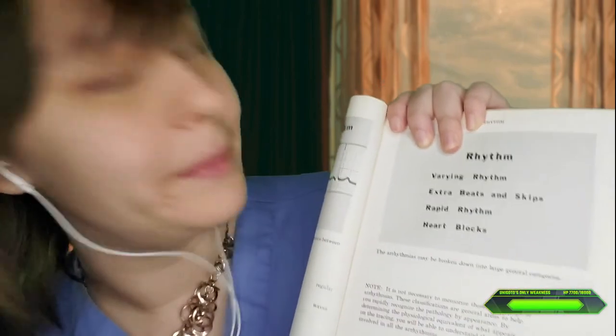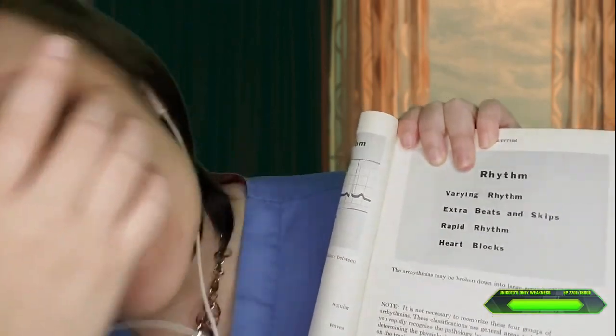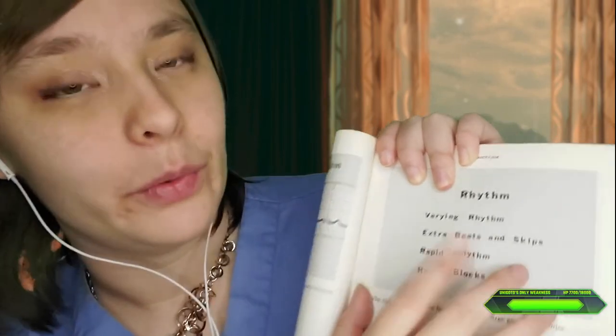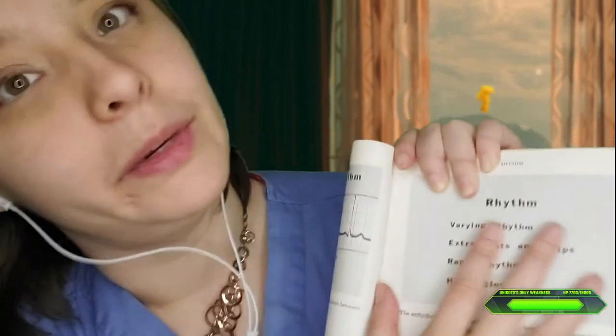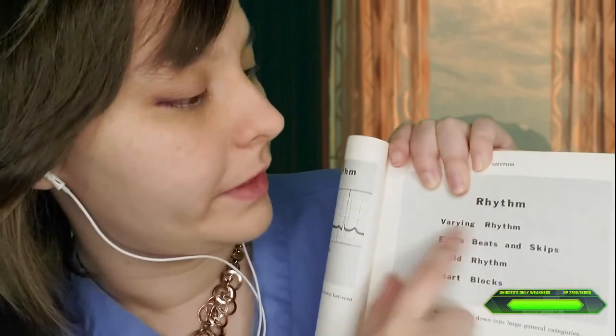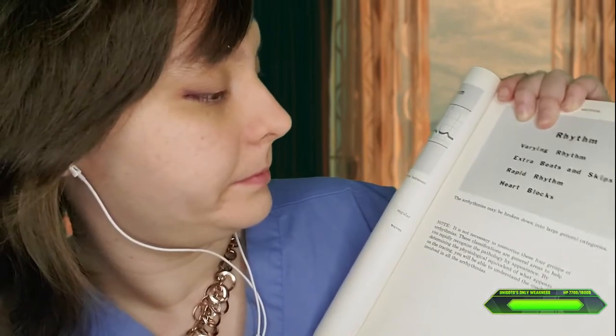A rhythm is going to help me. If you have any general medical questions, you're welcome. We're giving about 20 minutes of general medical education, and then we're going to head over and do some mental health and some superhero stuff. Varying rhythm, extra beats and skips, rapid rhythm, and heart blocks — those are general categories of arrhythmia.